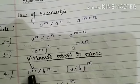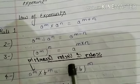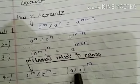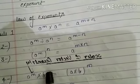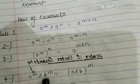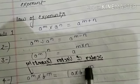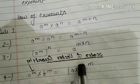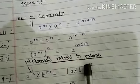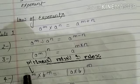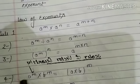Rule 4: a to the power m multiplied by b to the power m equals bracket a cross b, whole to the power m. When the exponents are the same but the bases are different, you write a cross b to the same power m.